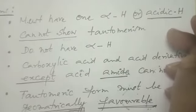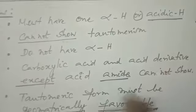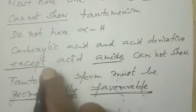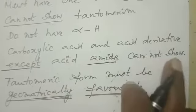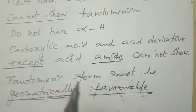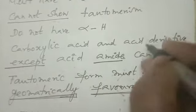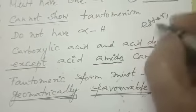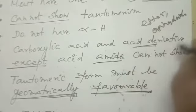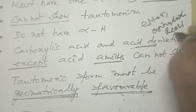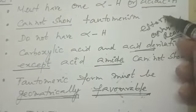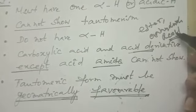The condition is: alpha hydrogen should be present — at least one. The second very important point is: carboxylic acid and their derivatives, except acid amide, cannot show Tautomerism. That means only the amide shows Tautomerism. The derivatives of acid are: ester, anhydride, acid chloride, and amide. Among these four, only amide shows Tautomerism.